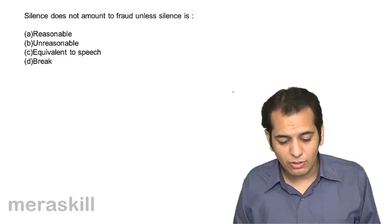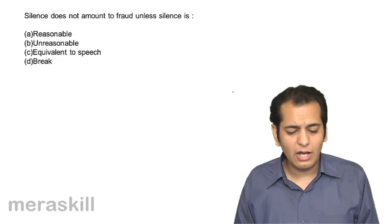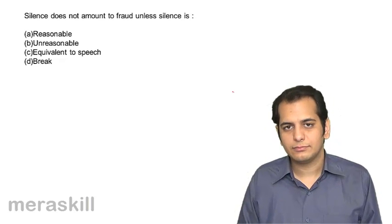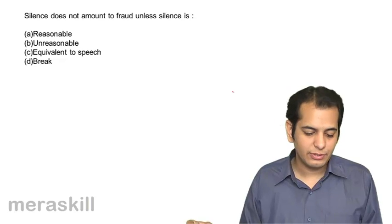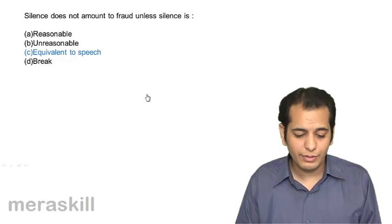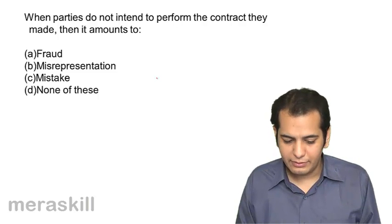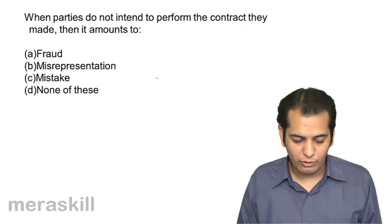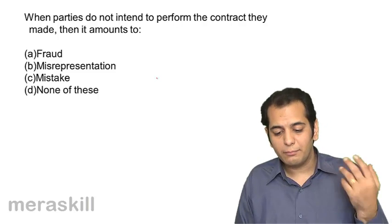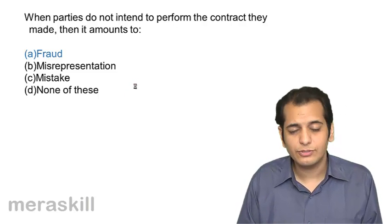Silence does not amount to fraud unless silence is: A reasonable, B unreasonable, C equivalent to speech, D break. The answer is C — equivalent to speech. When parties do not intend to perform the contract they made, it amounts to: A fraud, B misrepresentation, C mistake, D none of these. When you make a promise and do not intend to perform it, that becomes fraud. The answer is A — fraud.